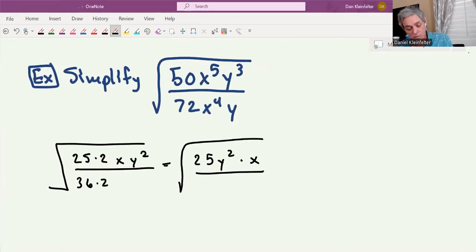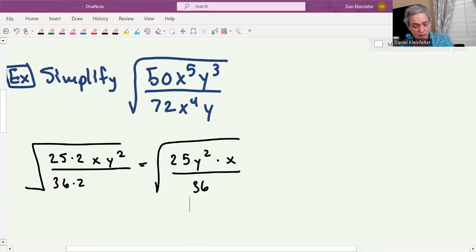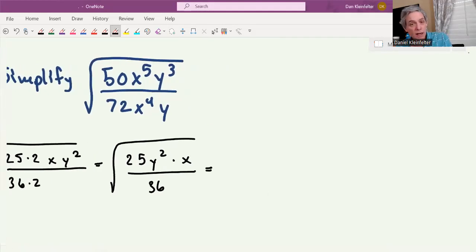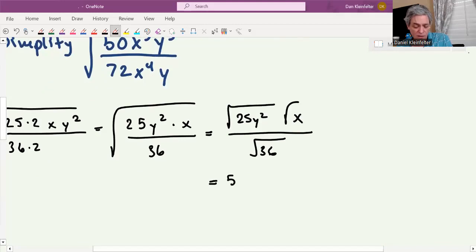That will leave us with 25y squared x. I flip-flopped those just to make it clear what we're going to do with it next, which is to separate the perfect squares from the not-so-perfect squares. So we have 25y squared x still in the numerator, 36 in the denominator. Up top, we're going to split that into 25y squared in one square root and the square root of x in the other. Down below, we'll have the square root of 36. The square root of 25y squared is 5y, square root of x is the square root of x, and down below we'll just have a 6.